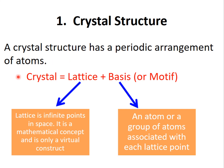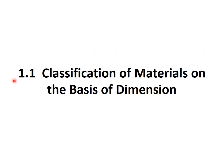If we define a crystal structure as an equation, then a crystal is composed of lattice plus basis, also called a motif. Lattice is an infinite set of points in space — it is a mathematical concept and only a virtual construct. Basis, or motif, is an atom or group of atoms associated with each lattice point.